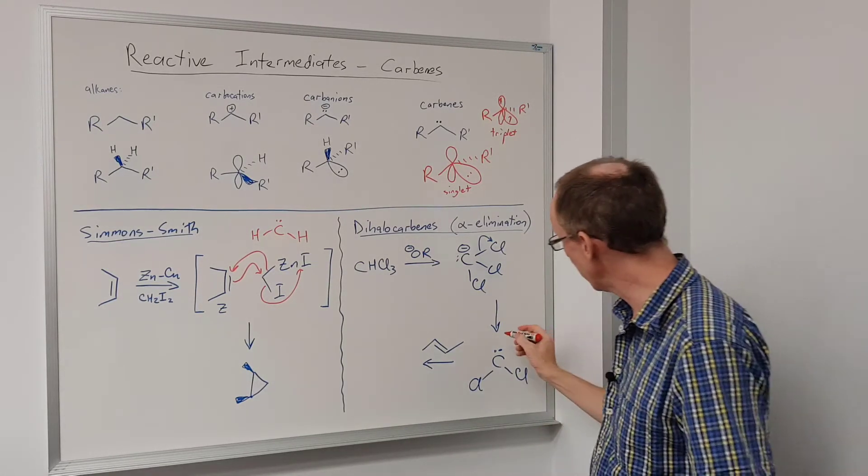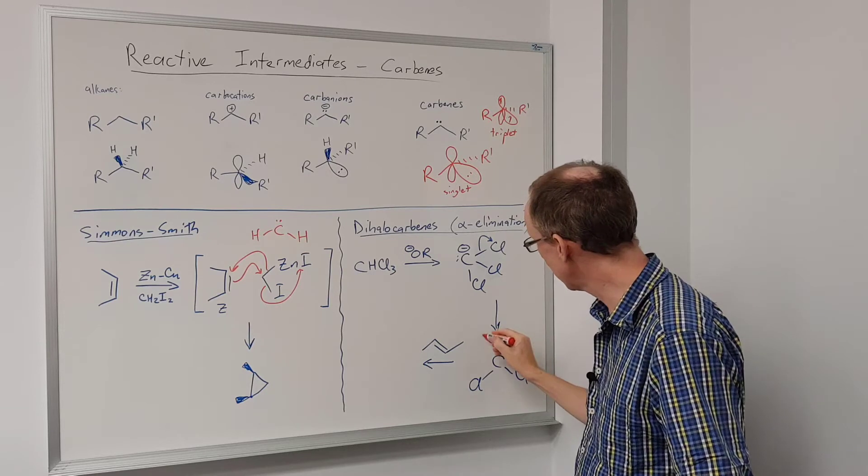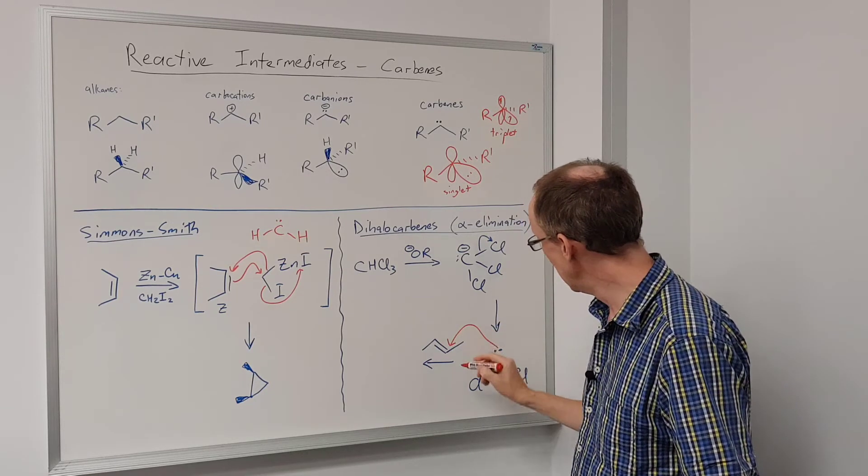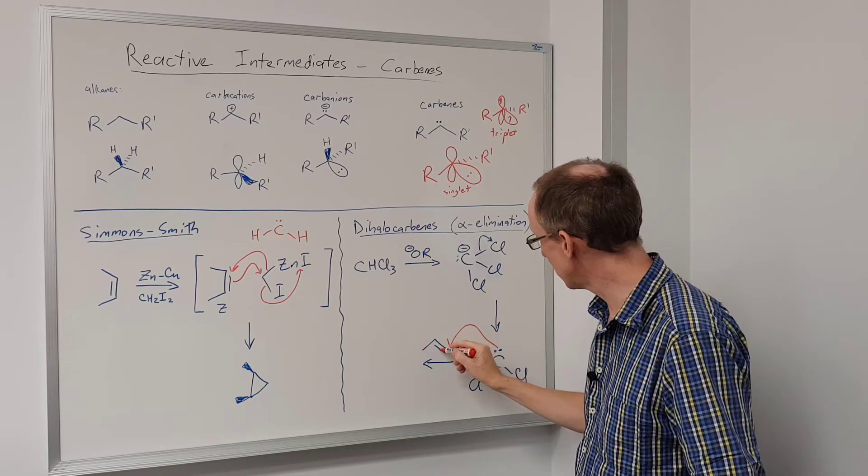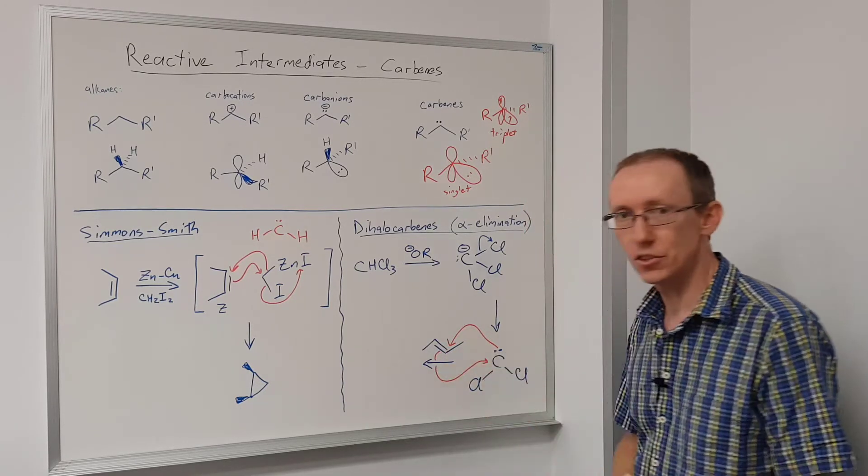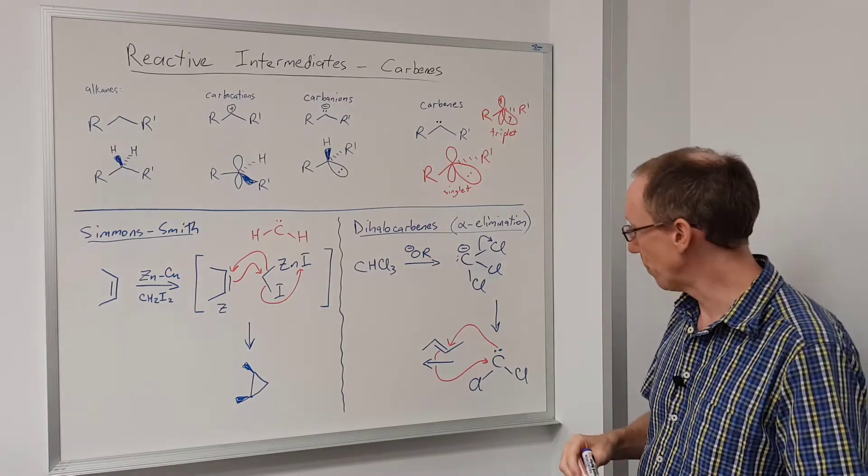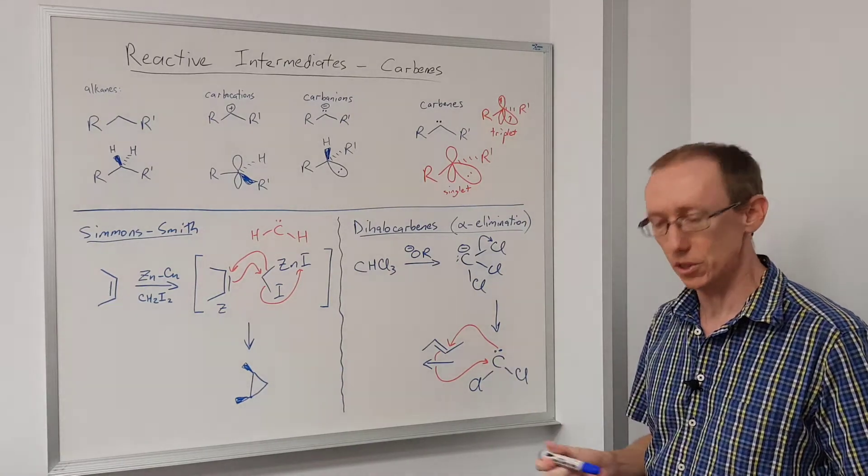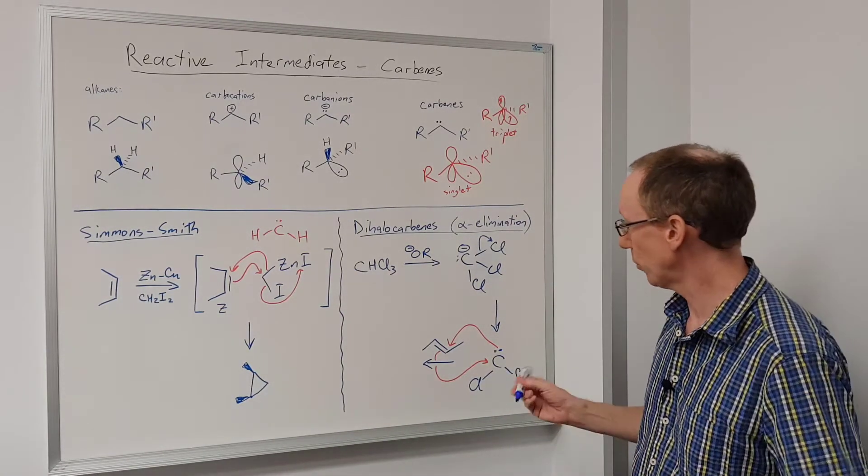If we get that pair of electrons to attack this alkene, then we can also get this alkene to attack that carbon. So both ends of this double bond are attacking the one carbon, so it'll also end up with a cyclopropane as the product.